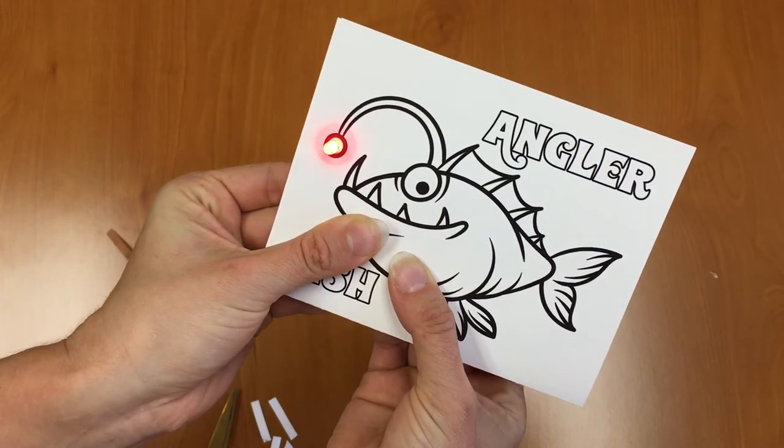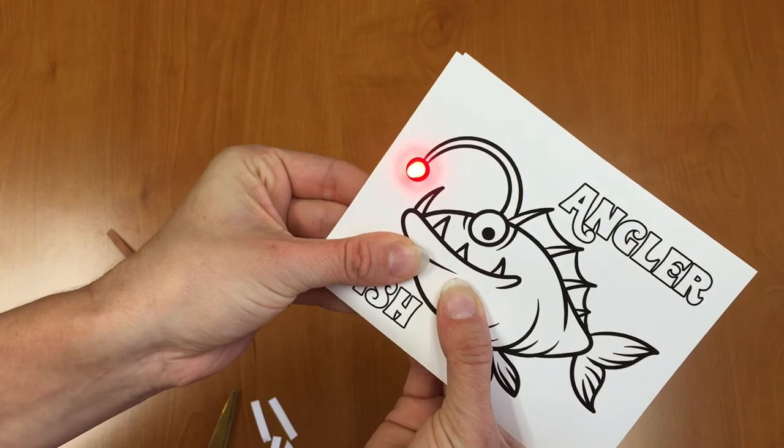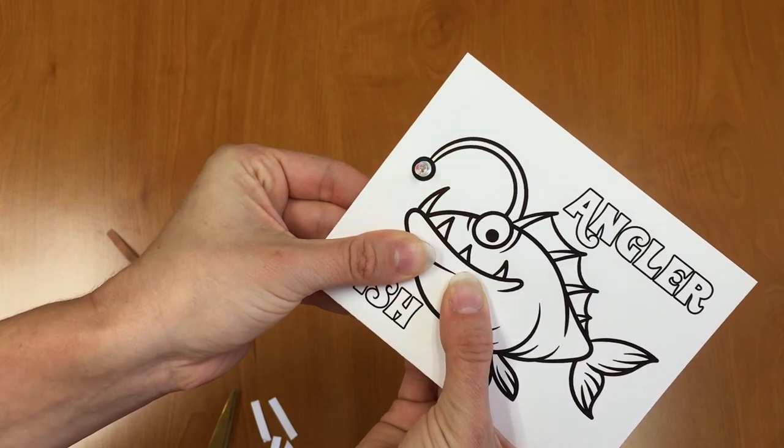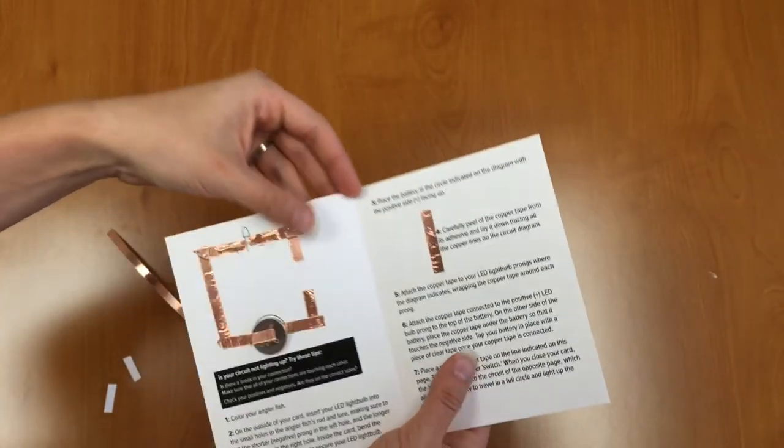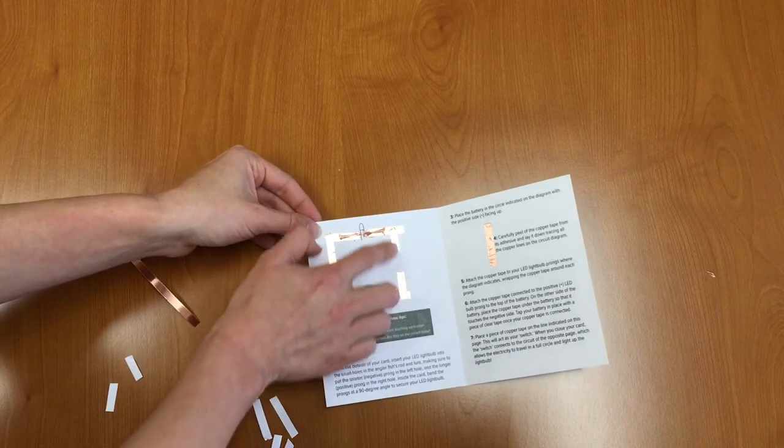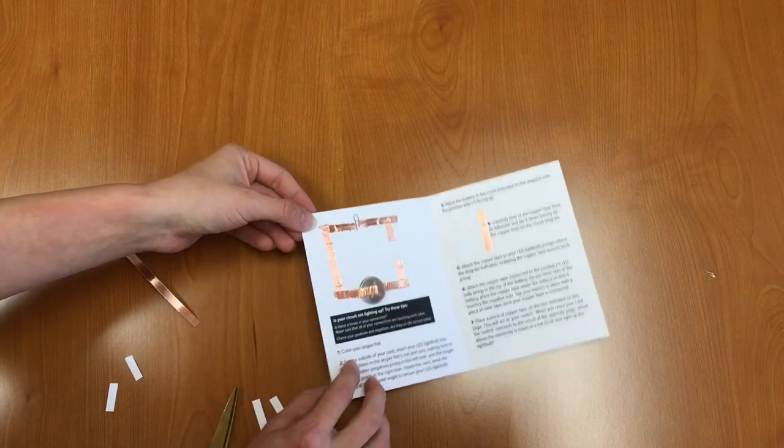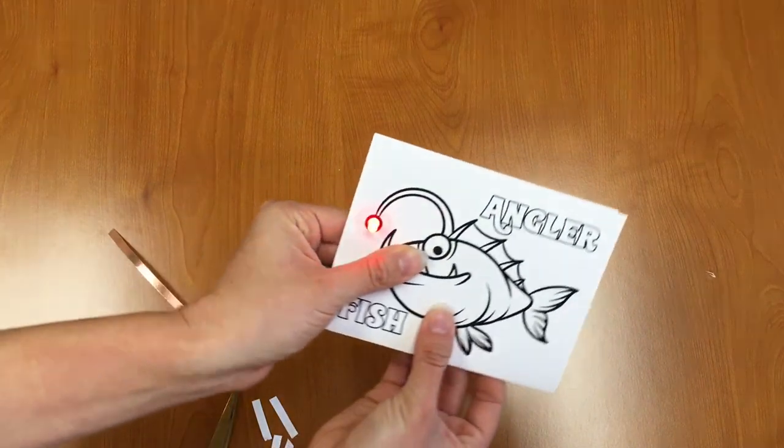Great job, everyone. You might have to wiggle your card around a little bit, kind of move it with your fingers so you can find where that connection is exactly. Now, if you want to keep the connection on all the time, you can place a piece of copper tape connecting these two pieces right here as well. But otherwise, you have completed your circuit card connection.